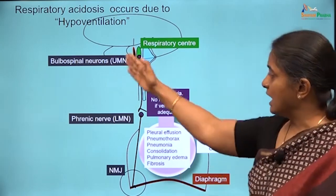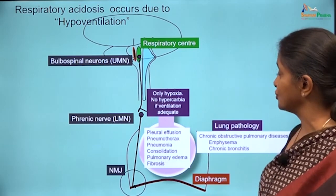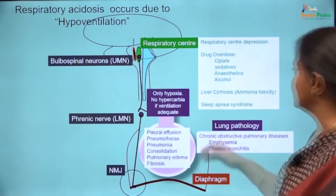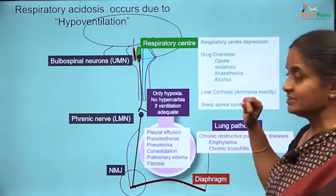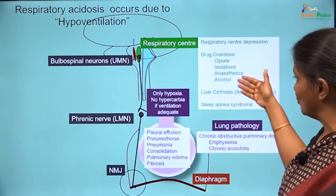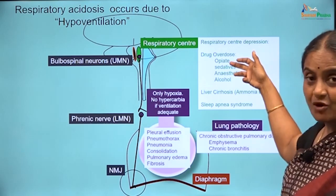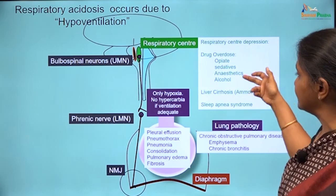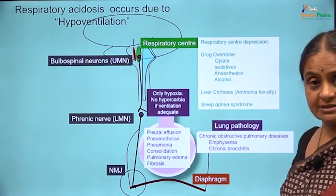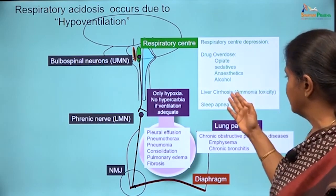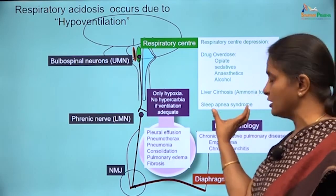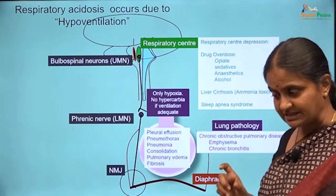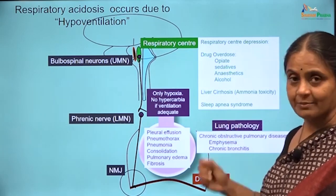Now let us look at other possible causes of respiratory acidosis. There can be respiratory center depression, which usually occurs in drug overdose — opiates, excess morphine, excess sedatives, anesthetics, even alcohol. Ammonia toxicity and obstructive sleep apnea syndrome are also causes.